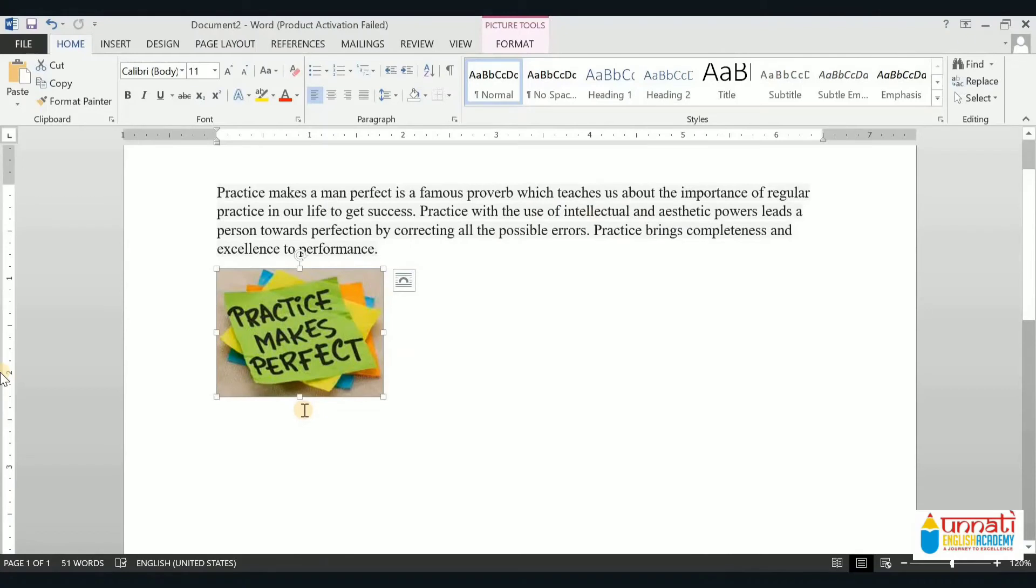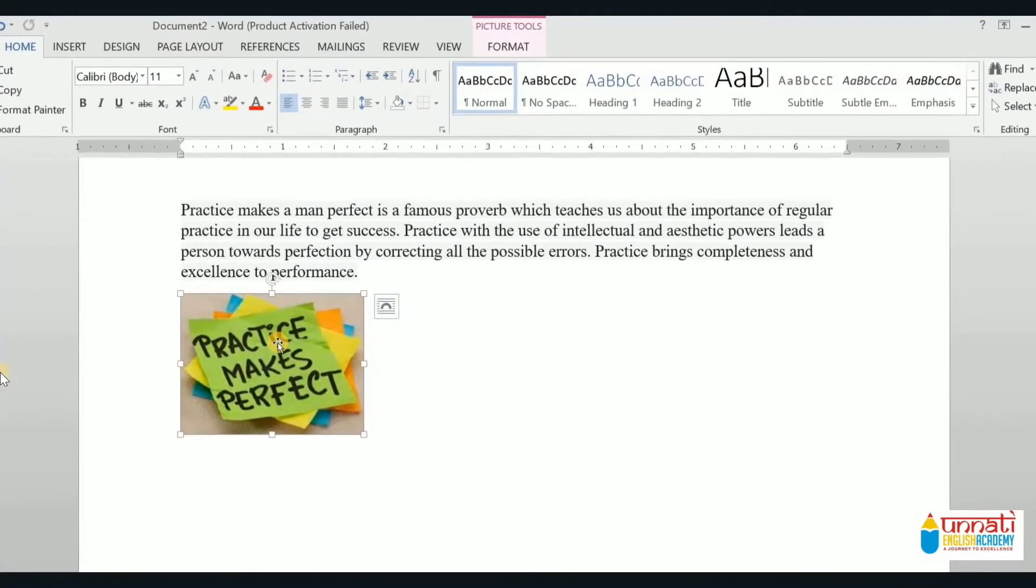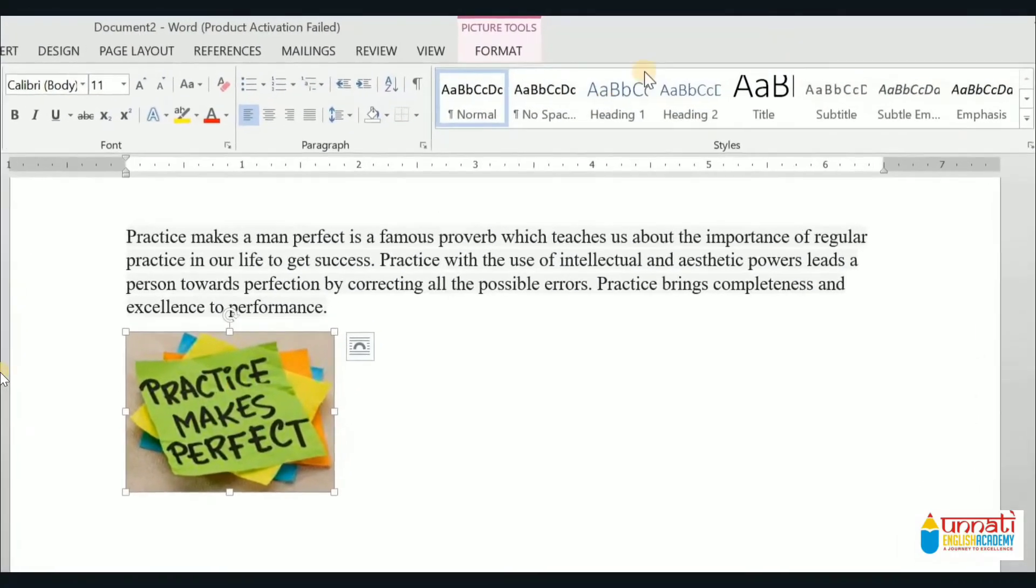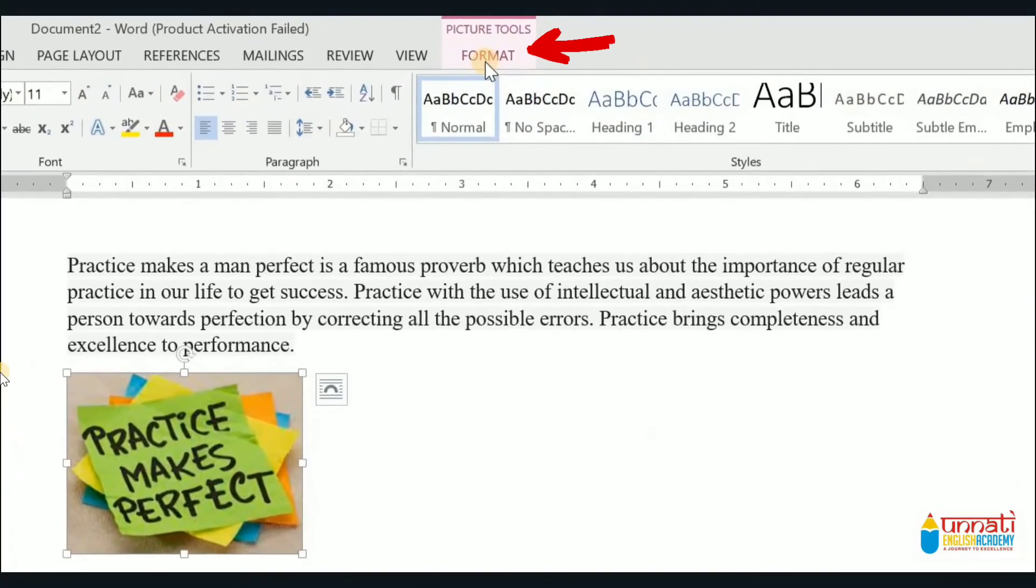To wrap text around a picture or an image, let's see. To wrap text around an image, first of all select the image. Now click the Format tab that appears under Picture Tools.